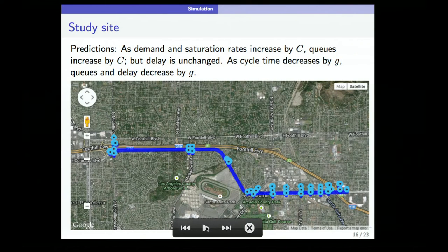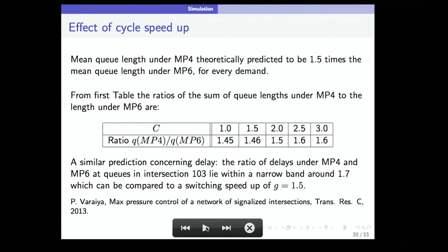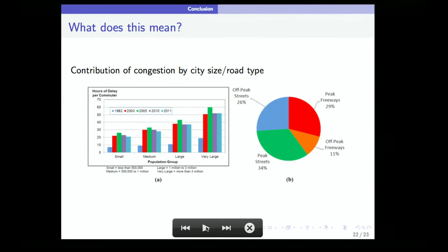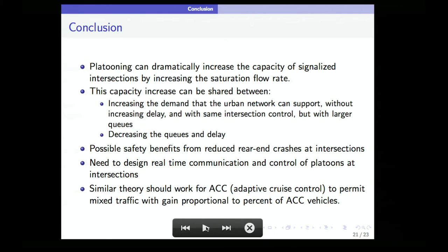This is an analysis of simulation in the same network that Alex discussed. I'll skip through that, and it shows the simulation shows exactly the kind of prediction that you expect. This leads to the following conclusion: platooning technology can dramatically increase the capacity of intersections, and therefore what you can now share between increasing the demand, increasing traffic, or decreasing queues and delays. There are other possible safety benefits. Because it's moving in a platoon, you'll reduce rear-end crashes.